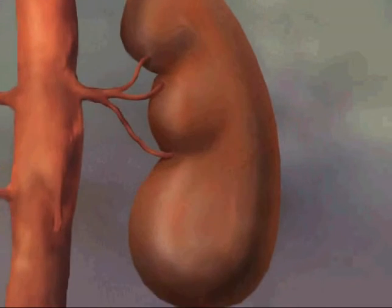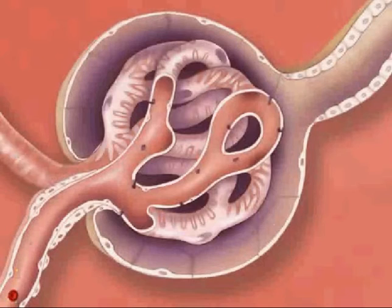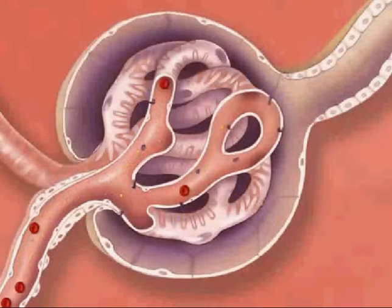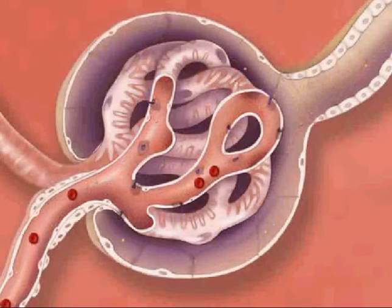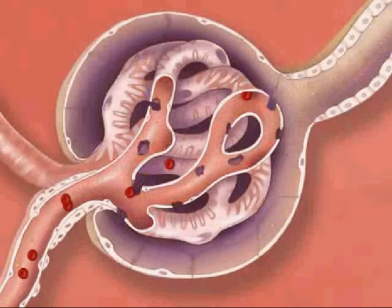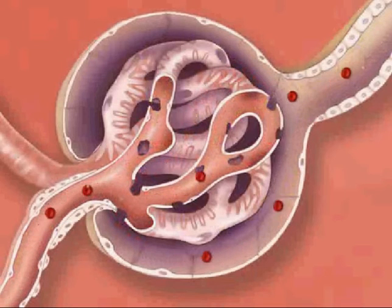Third, kidneys can be damaged. The capillaries of the kidney are delicate; continually subjected to high blood pressure, they break down, becoming permeable to proteins and other molecules. The kidneys' tubules can become clogged, decreasing the kidneys' ability to make urine.